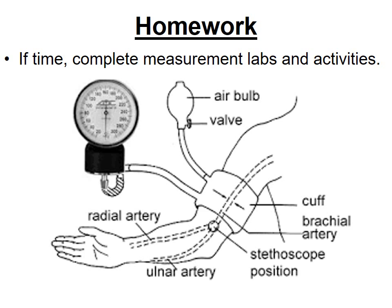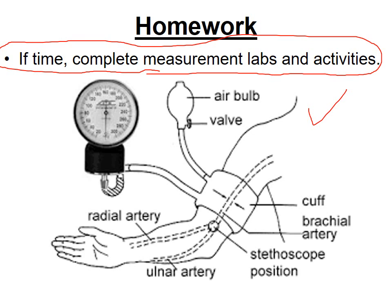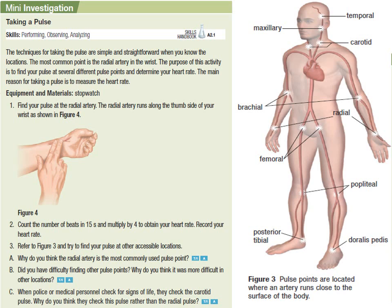Complete the readings on measurements in the circulatory system. A lab using probes or manual pulse-measuring techniques may follow. There's a mini investigation in the PowerPoint where you can experiment with measuring your pulse and beats per minute. If you have a wearable device like an Apple Watch, Garmin, or Fitbit, try comparing its heart rate reading to measuring manually with your fingers to see how closely they agree.